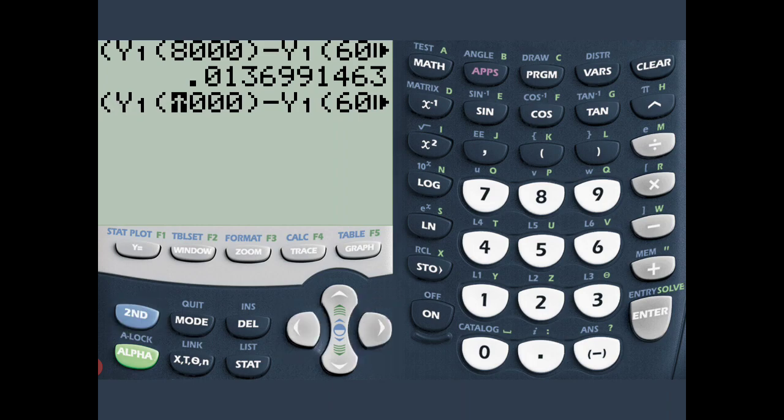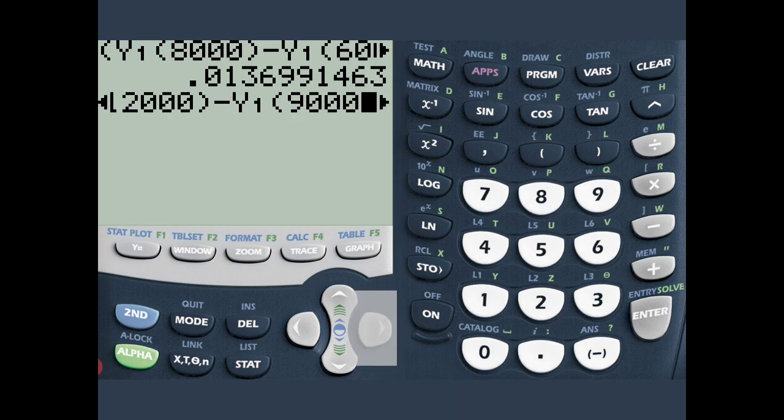Same thing over here. I'm going to press 2nd, delete, press 1, 2, and then delete the 8. And change that 6 to a 9. So it's Y1 of 9,000. And again, I'm going to press enter.